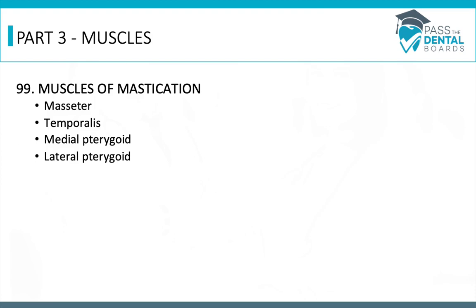We are just continuing right along with our lecture on the TMJ, and in this one we're going to focus on the muscles that surround the TMJ, and those are called the muscles of mastication. There are four main ones that we have to keep track of: the masseter, the temporalis, the medial pterygoid, and the lateral pterygoid.